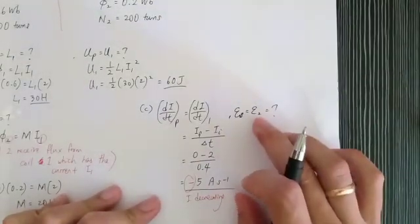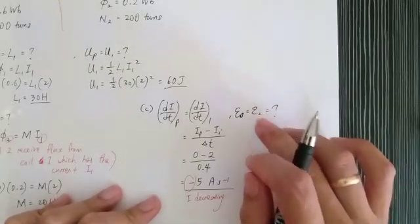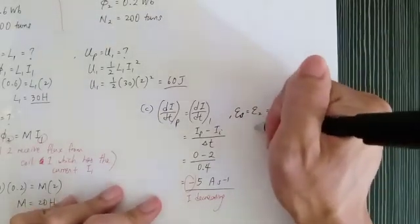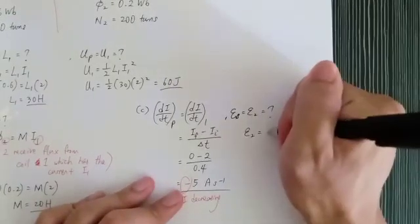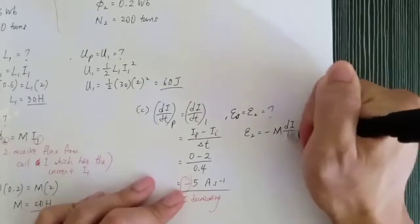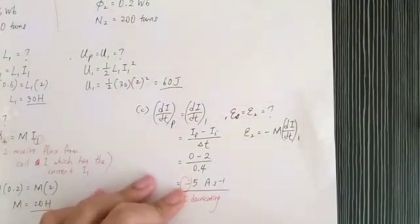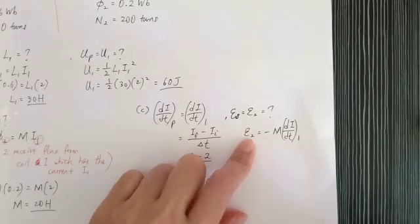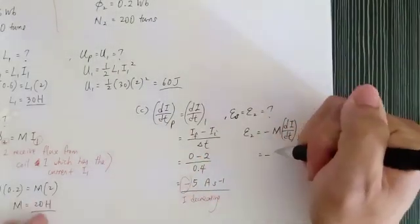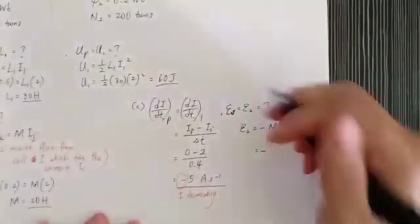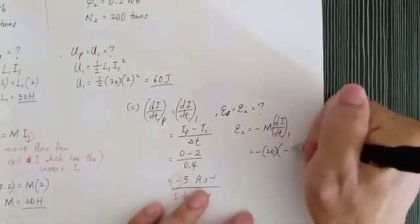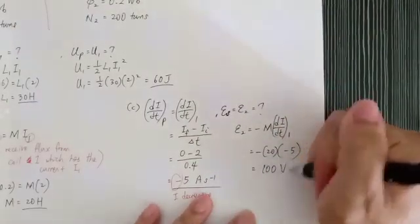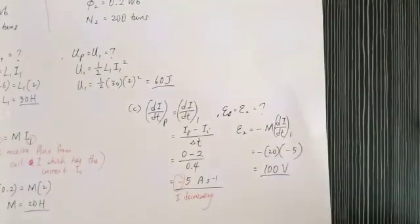The EMF in coil two is generated because the current is changing in coil one, and coil two receives the changing flux — this is mutual induction. Using the formula E2 = −M·(dI1/dt), we substitute M = 20 henries and dI1/dt = −5 A/s. The result is E2 = 100 volts.